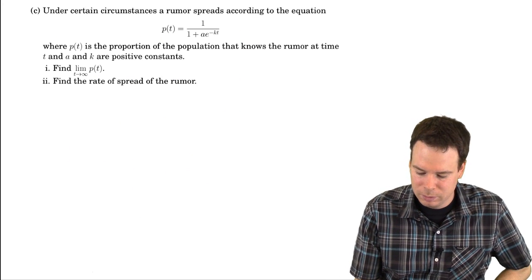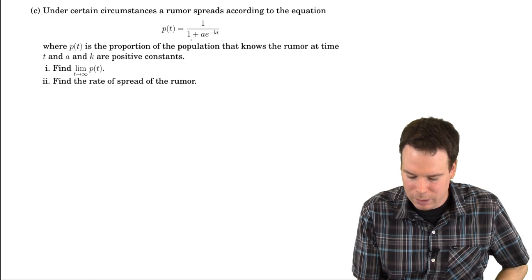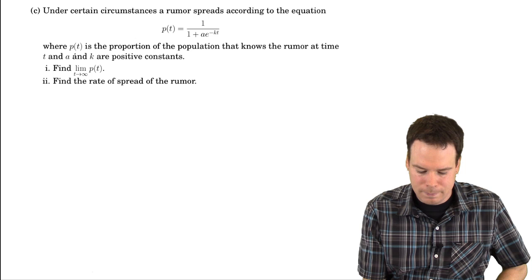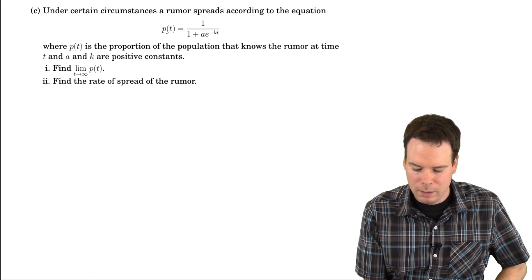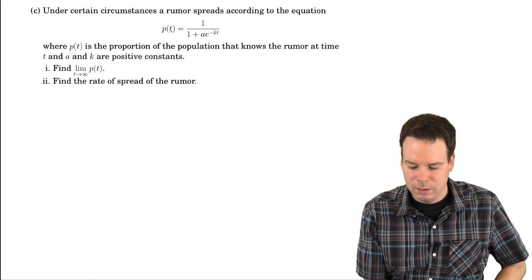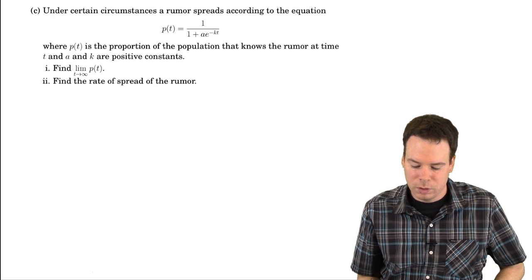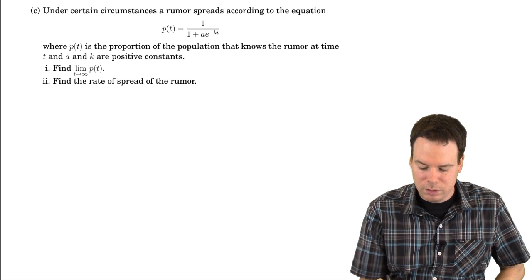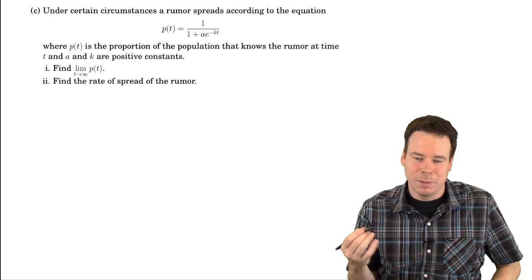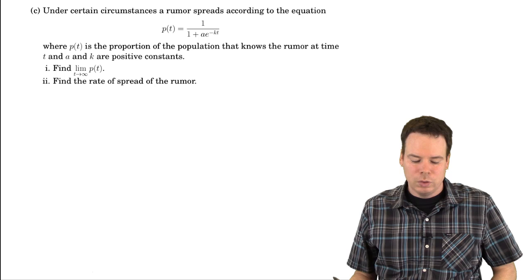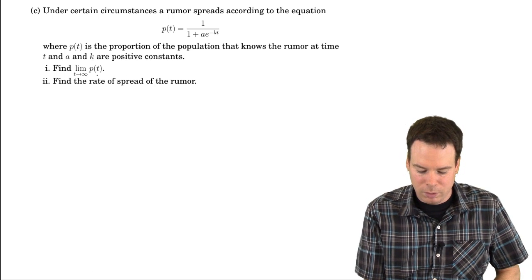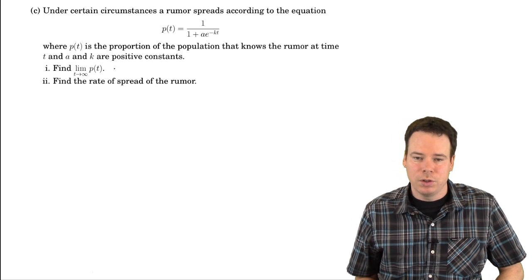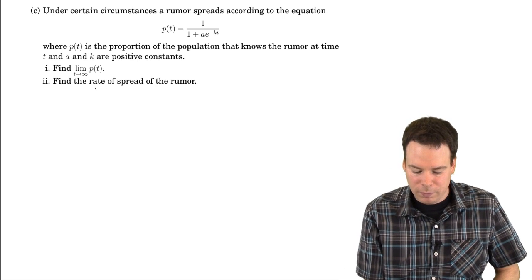Let's have a look at one more example. In this example we have a model for how a rumor spreads. Here p is a function of t, where t is the time measured since the rumor started, and p is the proportion of the population that knows about the rumor. a and k are positive constants that, in some sense, depend on the juiciness of the rumor. We're asked: what is the limit as t goes to infinity, and what is the rate of spread of the rumor?